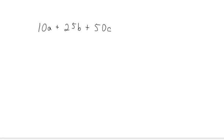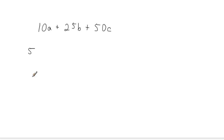In this case, the greatest common factor of each of these numbers is 5. So we're going to take the greatest common factor of the coefficients and put it in front in order to factor it out. When we factor, we don't want to change the value of the polynomial at all. We want the polynomial to keep the same value, but just look different.